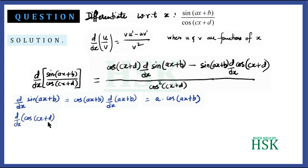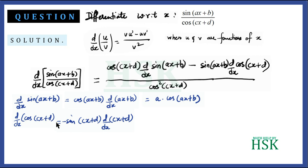Similarly, d/dx of cos(cx + d) equals minus sin(cx + d) times d/dx of (cx + d), since differentiation of cos x is minus sin x. Since d is a constant its differentiation is 0, and differentiation of x is 1, giving us c. So d/dx of cos(cx + d) equals minus c·sin(cx + d).